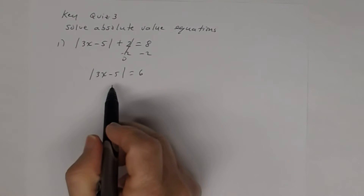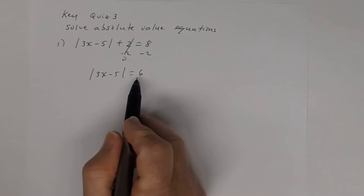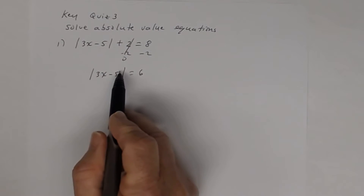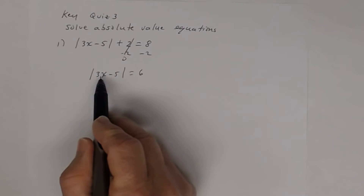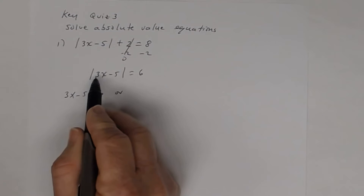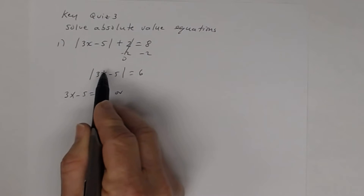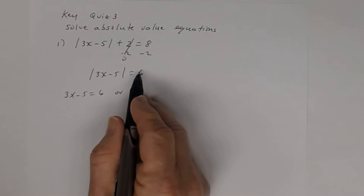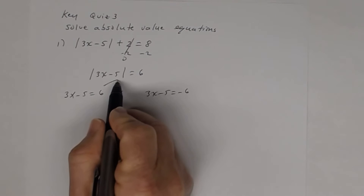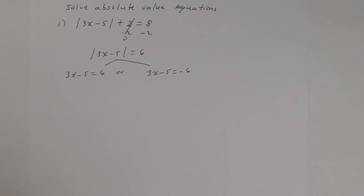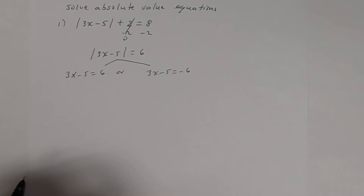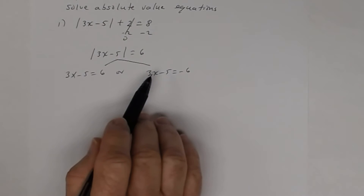Now once you get to that point, you have the absolute value of 3x minus 5 equals 6. In order for that equation to be a true statement, if 3x minus 5 is positive, then the expression and 6 must be equal. If 3x minus 5 is negative, then the expression and 6 are opposites, so we get 3x minus 5 equals negative 6. You split it into two separate linear equations without the absolute value.